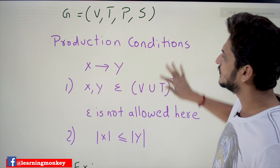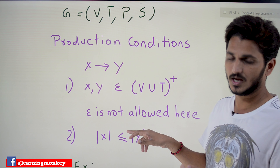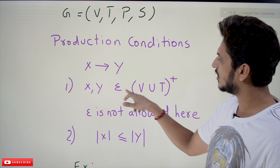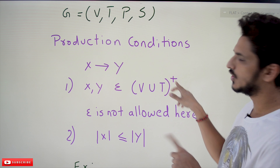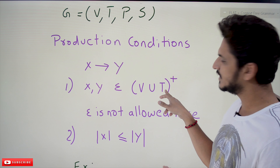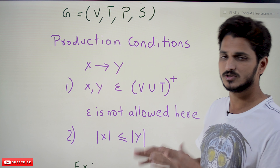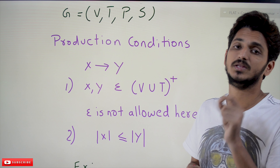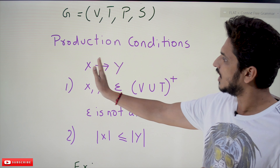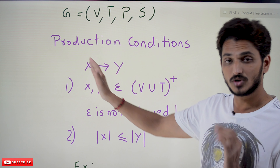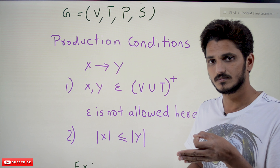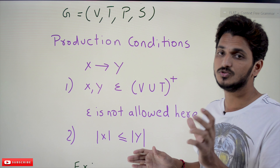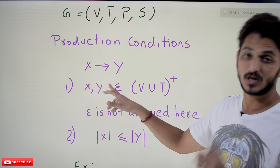The production conditions are: if you take X → Y as a production in context sensitive grammar, then it has to follow some conditions. The first condition is that X and Y both belong to (V ∪ T)+, meaning a combination of terminals and non-terminals, where the plus means at least one symbol should be there. So on the left hand side you should have at least one terminal or non-terminal, and on the right hand side you should have at least one terminal or non-terminal. That is the first condition of context sensitive grammar.